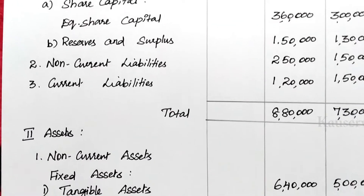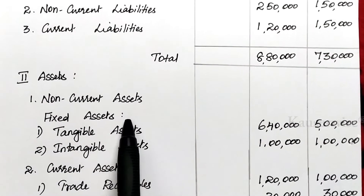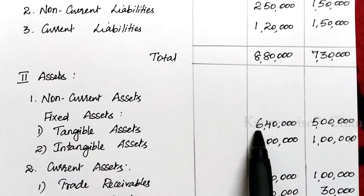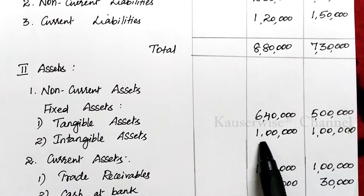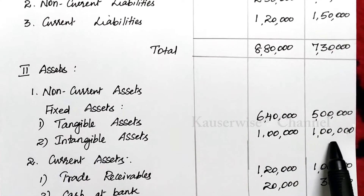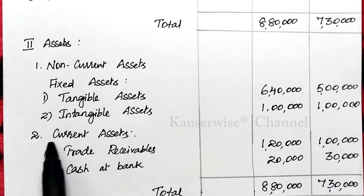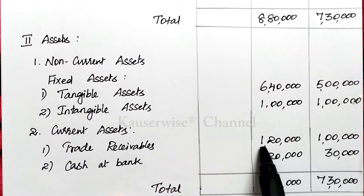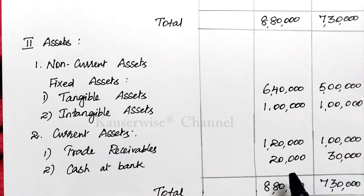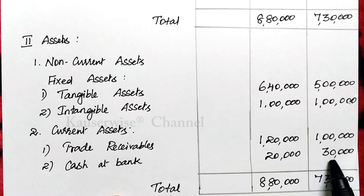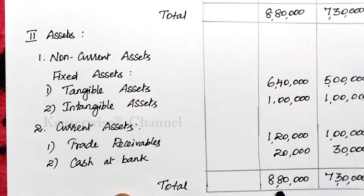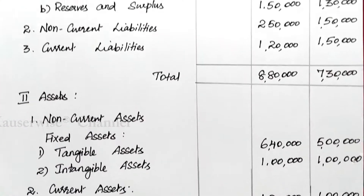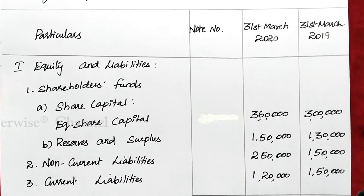Under assets, non-current assets include fixed assets: tangible assets for the current year 6,40,000, previous year 5,00,000; and intangible assets for the current year 1,00,000, previous year also 1,00,000. Under current assets: trade receivables — current year 1,20,000, previous year 1,00,000; cash at bank — current year 20,000, previous year 30,000. Total assets: current year 8,80,000 and previous year 7,30,000.